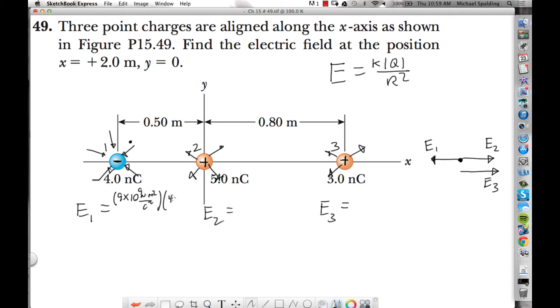So E1, 4 times 10 to the negative 9th. Now, what's the distance for charge 1? It's the distance from here all the way to there. What's that distance? Well, what's the distance from here to there? That's 2 meters. So what must this distance be? It's got to be 2.5 meters. And then square it.